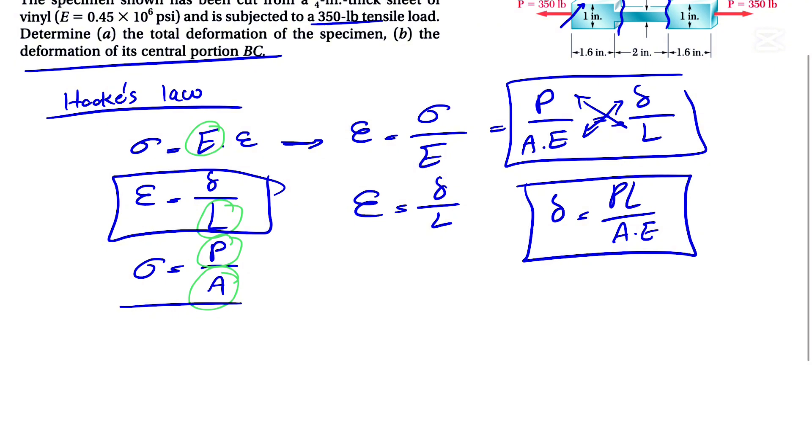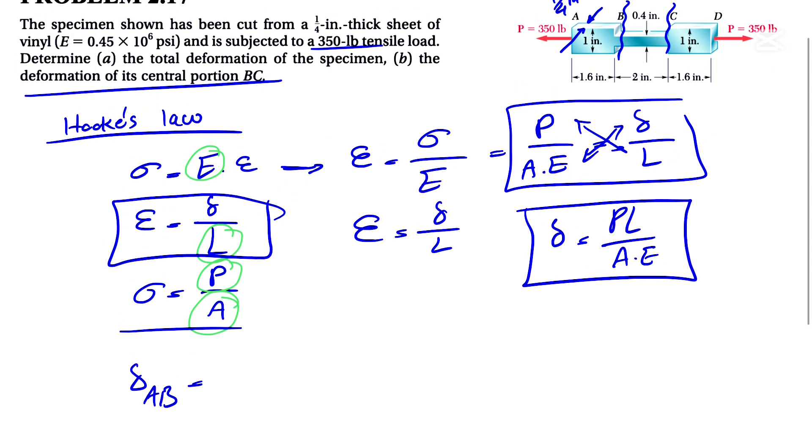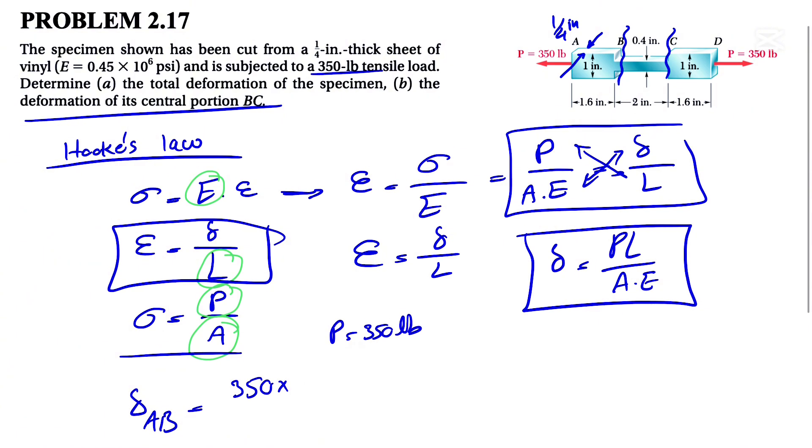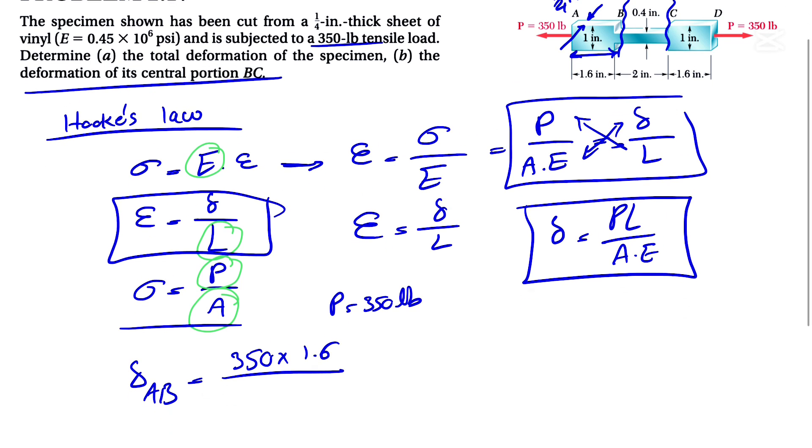What we're going to do now is go for each part. We're going to start with the deformation of AB. We have the same force, we know our P is 350 pounds, and the length should be pretty easy for each of these. So let's go with AB. We have the same force 350, the L for AB is what we have from here to here, is 1.6 over the area.